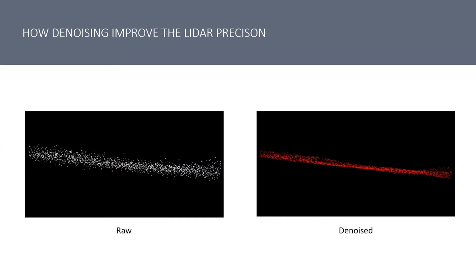When we see the data, especially on the ground surface, you can see on the slides: before we apply this module, and then on the right hand side is after. You can see the level of noise on the raw data before we apply this module is quite big. Even though we can still see the pattern of where the data should be, the right hand side gives us double confirmation that the surface shown is actually the correct actual surface.